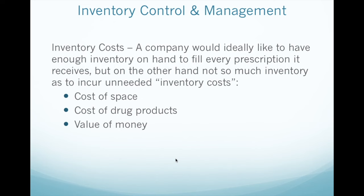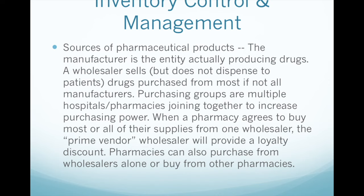Sources of pharmaceutical products: the manufacturer is the entity actually producing drugs. A wholesaler sells — but does not dispense to patients — drugs purchased from most, if not all, manufacturers. Purchasing groups are multiple hospitals or pharmacies joining together to increase purchasing power. When a pharmacy agrees to buy most or all of their supplies from one wholesaler, the prime vendor or wholesaler will provide a loyalty discount. Pharmacies can also purchase from wholesalers alone or buy from other pharmacies. The more you buy in bulk, the cheaper it becomes.